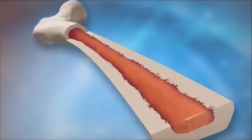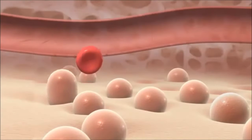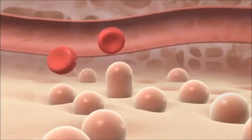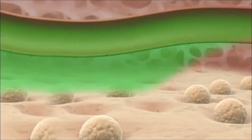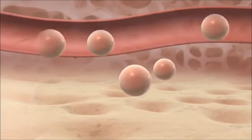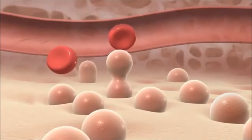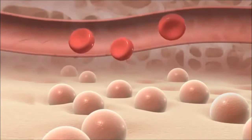Bone marrow transplant always brings up the image of someone going into an operating room and having the bone marrow put in, but it is not that. It's actually much more like a blood transfusion. Bone marrow is the spongy tissue inside some bones, and its job is to produce blood cells. To prepare for the transplant, patients have chemotherapy to kill the leukemia and malfunctioning marrow. Then transplanted blood stem cells are put into the bloodstream, and ideally the transplanted cells begin producing new healthy cells.